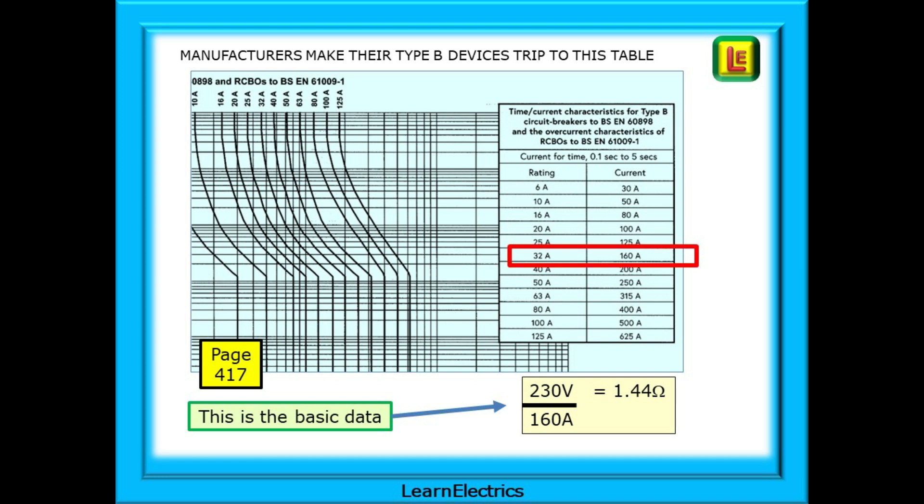This is the data for a Type B 32-amp device. Other devices will have a different Ohm's value.